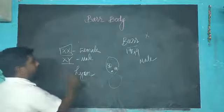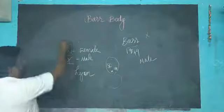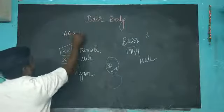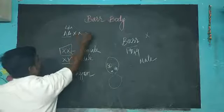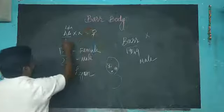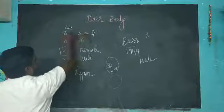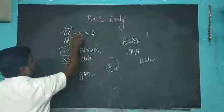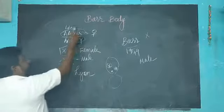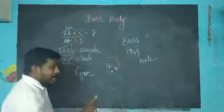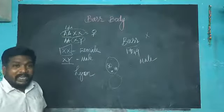After Lyon, the dosage compensation pointed out that of two chromosomes, one X chromosome is enough to be activated. Another X chromosome condenses and forms a Barr body.